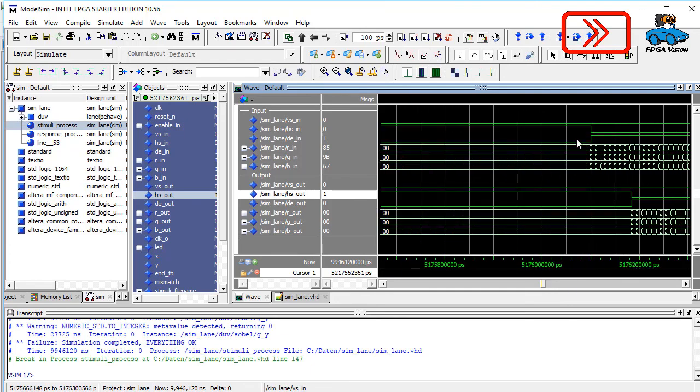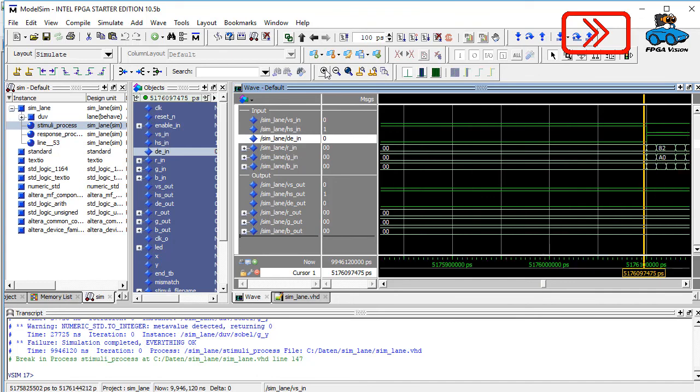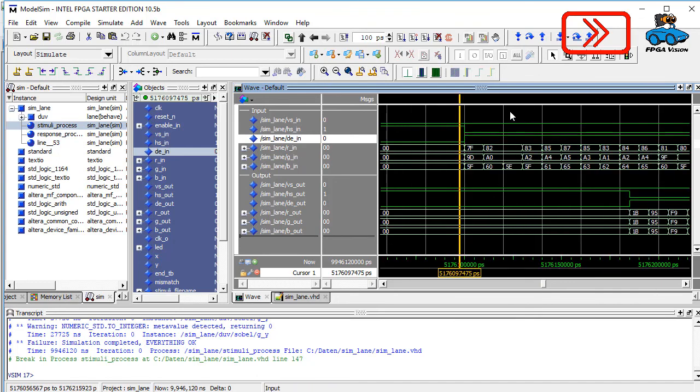And here, if we zoom in a little bit more, we can see individual pixels. On the top you see the input pixel. First pixel is RGB 7F 9D 5F. And here you see the output pixel. It's 1B 4 RGB.